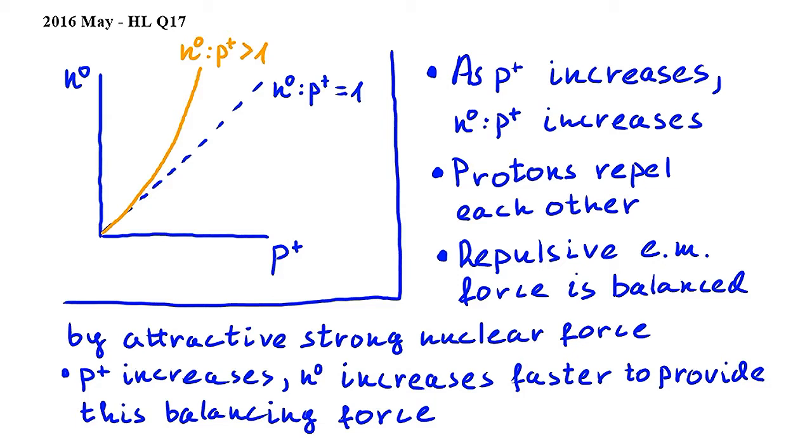So summarizing this, what we can deduce from the graph is that as stable nuclides get larger, they have to have more and more neutrons compared to protons in order to provide the balancing strong nuclear force, because the strong nuclear force has a very short range. After this long explanation, we can finally conclude that the answer to this question is A.